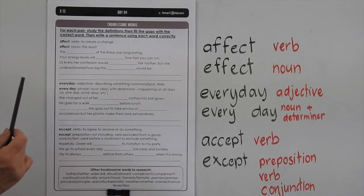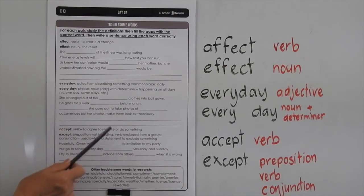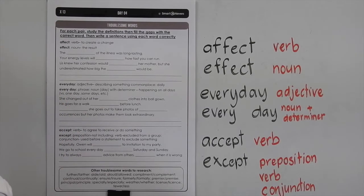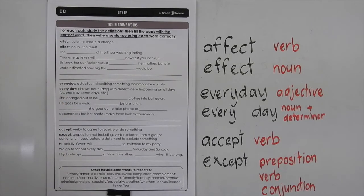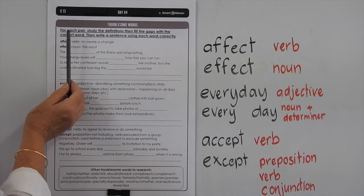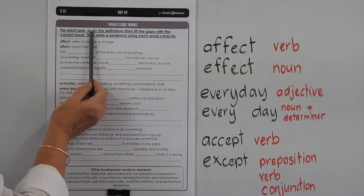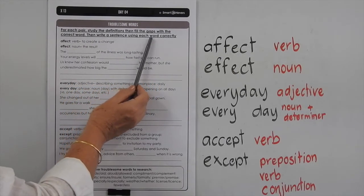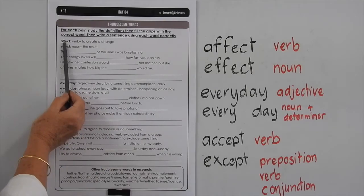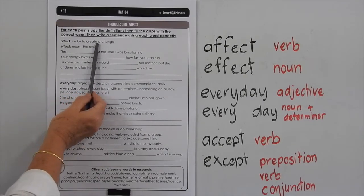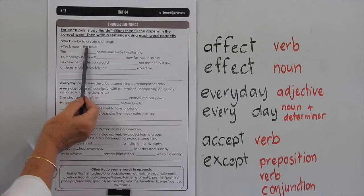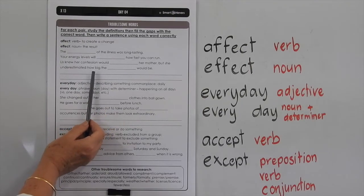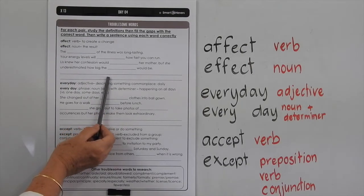We did some research and found that these pairs of words — we've given you three sets of pairs — are often tricky for people. They're some of the trickiest pairs that people cope with in their writing and reading. So for each pair, study the definitions and fill the gaps with the correct word. Then write a sentence using each word correctly. 'Affect' is a verb — it means to create a change. 'Effect' is a noun meaning the result. You have to fill these in correctly and then create a sentence of your own.